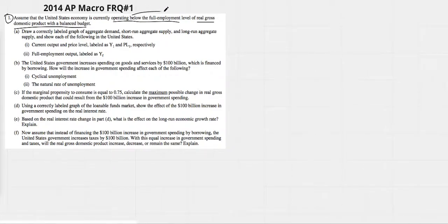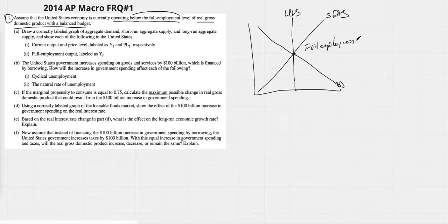So below full employment level. If we are at full employment, it's where aggregate demand, short-run aggregate supply, and long-run aggregate supply come together. This is full employment, and this is also our natural rate of unemployment. But if we're below the full employment level, it implies that we are in a recessionary situation, scenario, gap, however you want to describe it.